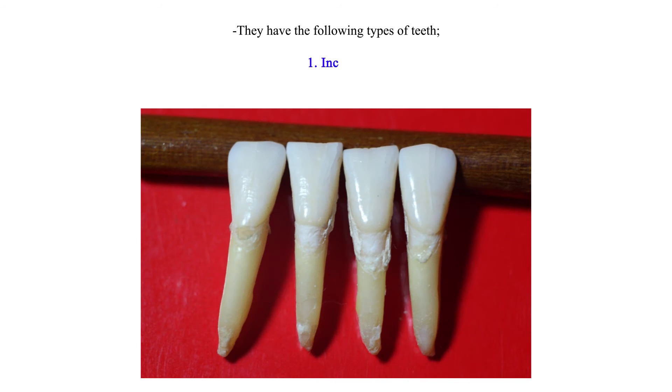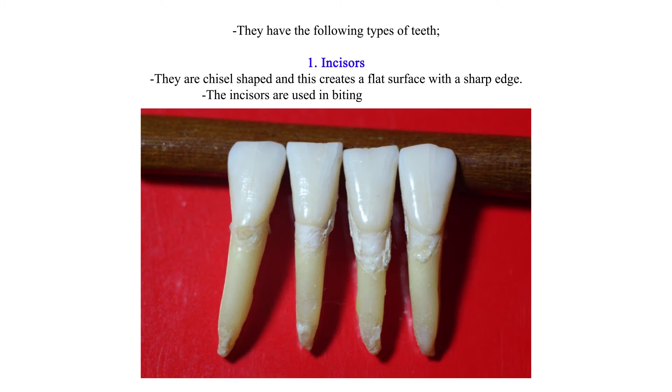Incisors. They are chisel shaped and this creates a flat surface with a sharp edge. The incisors are used in biting and cutting of food.